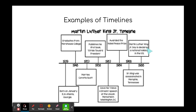And if you notice, each event happened on that date. So for example, in 1929 he was born on January 15th in Atlanta, Georgia. In 1964, he was awarded the Nobel Peace Prize.